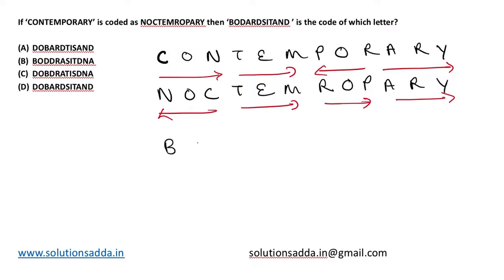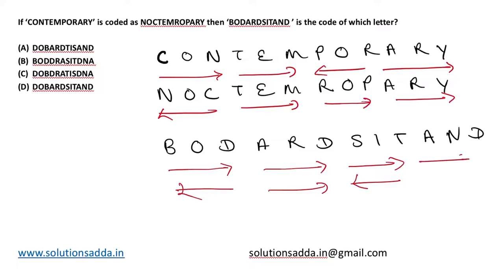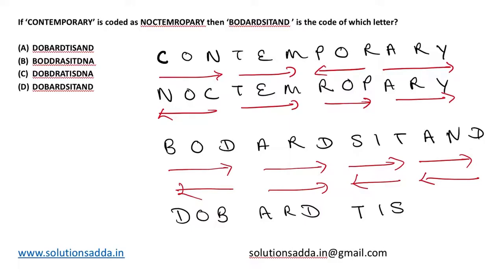The word given is B-O-D-A-R-D-S-I-T-A-N-D. Upon reversing the first three letters it will be D-O-B, keeping the next three letters the same, again reversing the next three letters, and keeping the following three letters as the same.